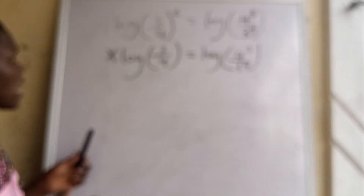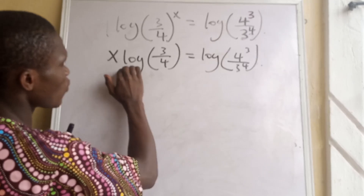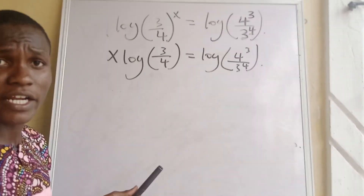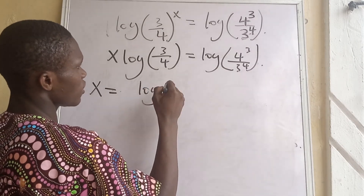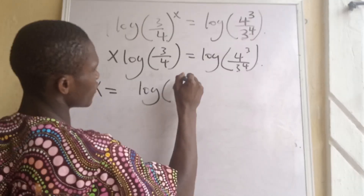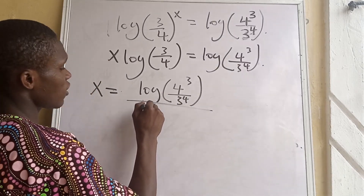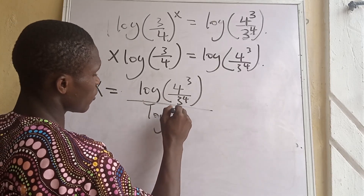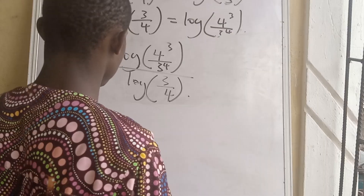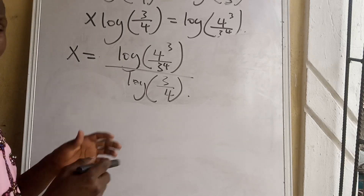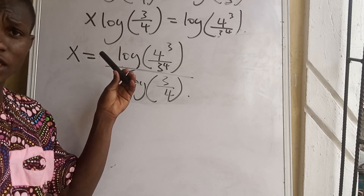To isolate x, we divide both sides by log(3/4). So x equals log(4^3 over 3^4) divided by log(3/4). We can leave the answer in this form, but we will rearrange it to make it easier to understand.